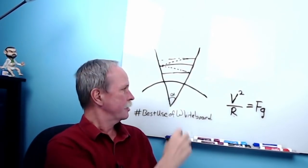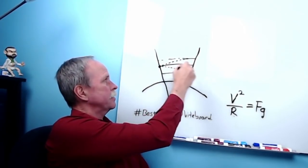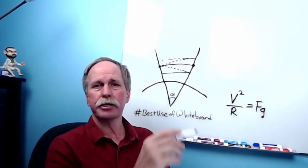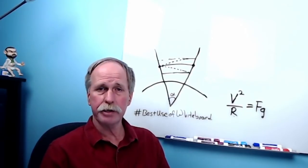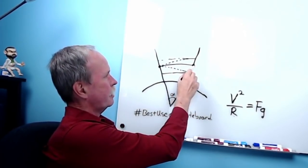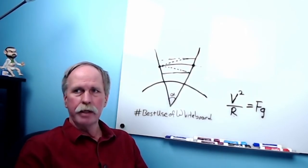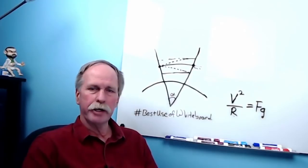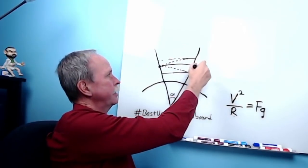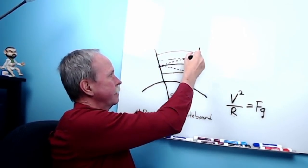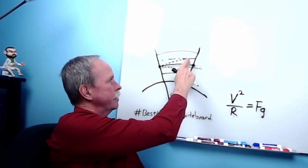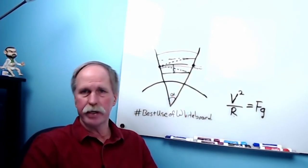Another way to look at it: you have to conserve angular speed. If you speed up a little, that would increase your angular speed, which you don't want. So you move upward until the arc fits the same angular wedge. Likewise, if you slow down, you bring it down to a lower orbit so it still fits in that wedge.